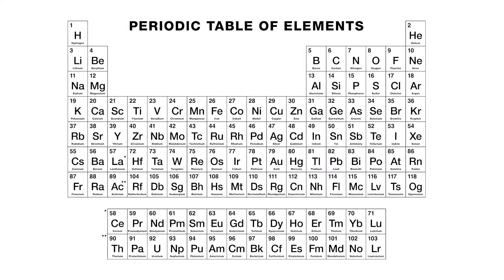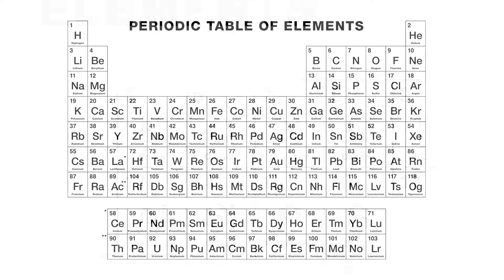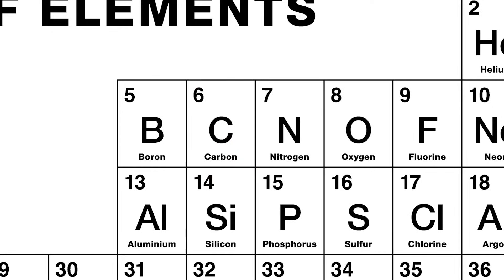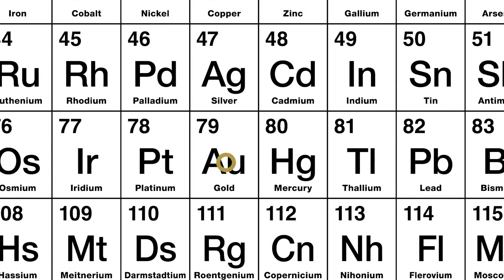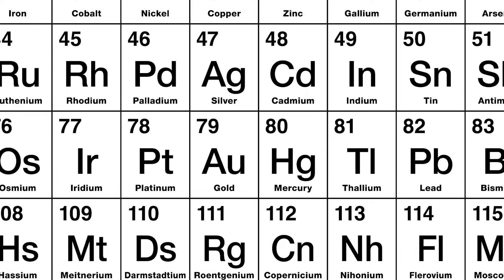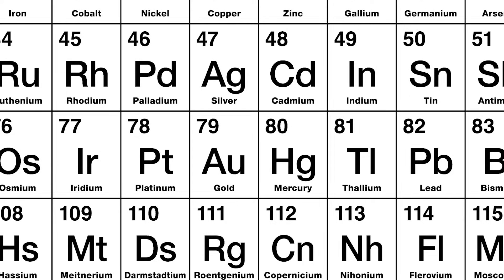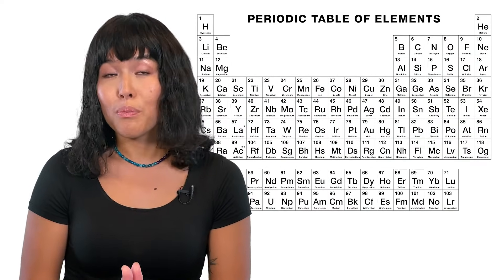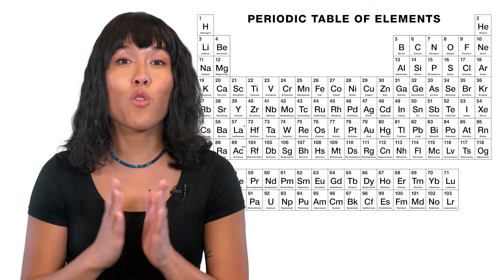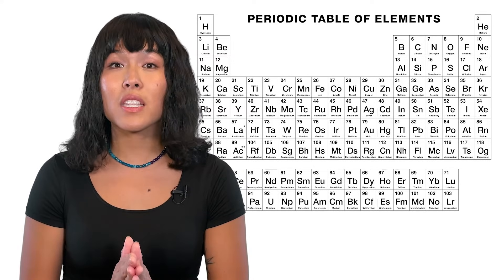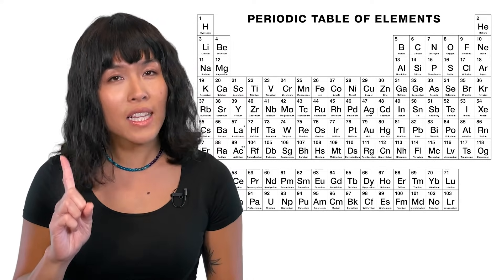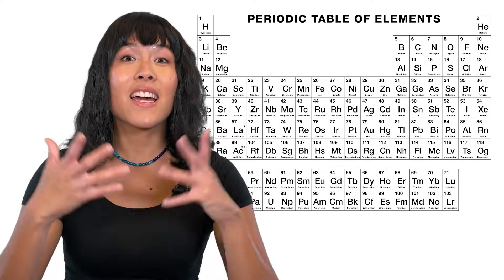Every element has an abbreviation shown in the periodic table. Some of them are easy to guess, like carbon's abbreviation, C. But others seem more random, like gold's abbreviation, AU. It's not really random, though — AU comes from the Latin word for gold, aurum. So, what about atoms? How do they relate to all of these different elements? It's actually pretty simple: the elements represent varieties of atoms, and every atom is a member of only one element. Think of the element as the atom's name.